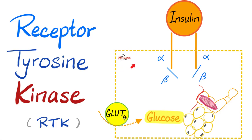My lovely people, what's going on? This is Medicosis Perfectionitis, where medicine makes perfect sense. We continue our endocrinology playlist. The previous video was the most important one, which was the difference between insulin land and glucagon land. Today it's time to talk about the insulin receptor tyrosine kinase, or RTK.